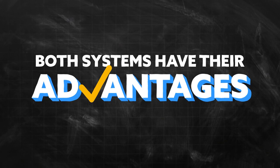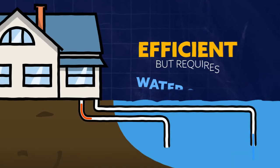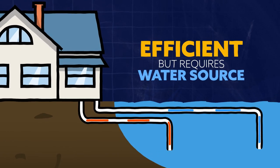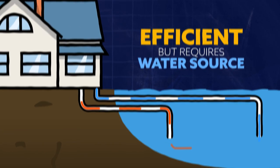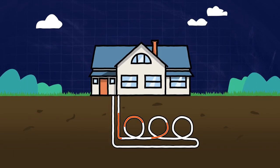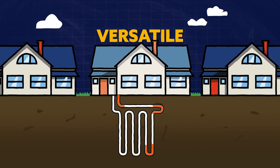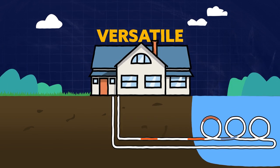Both systems have their advantages. Open loop systems are very efficient but they require a suitable water source. Closed loop systems are more versatile, working in various locations and climates.